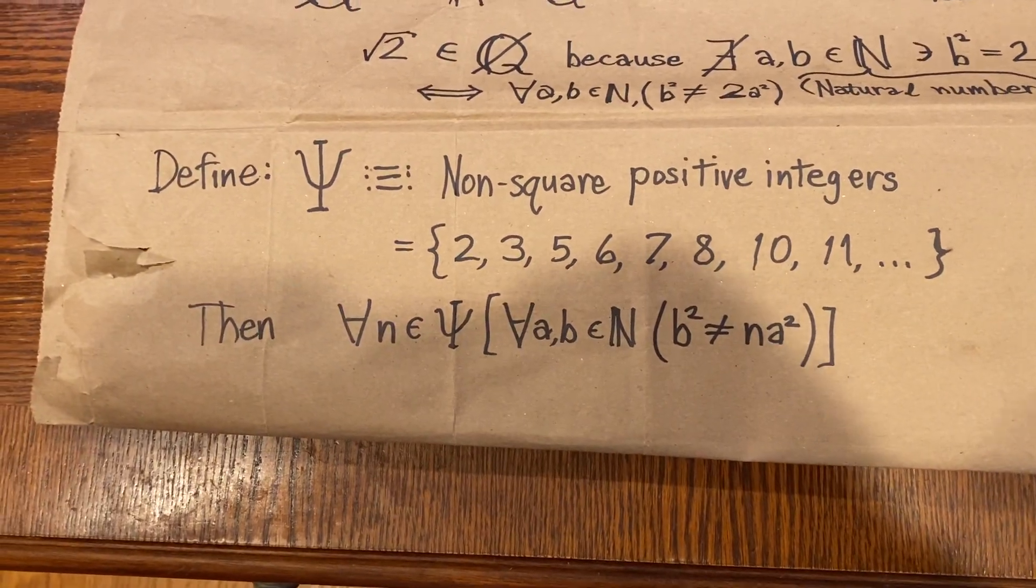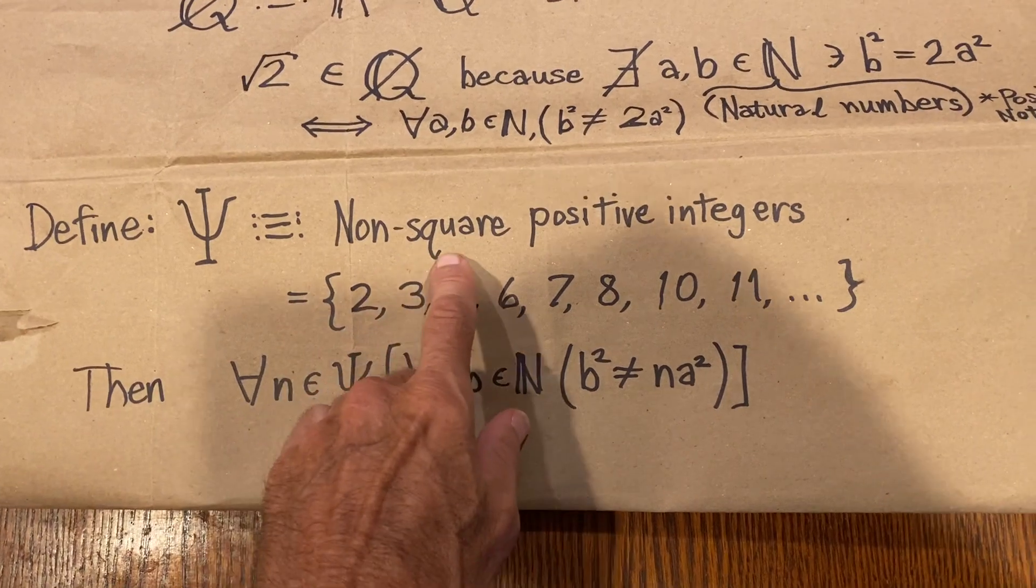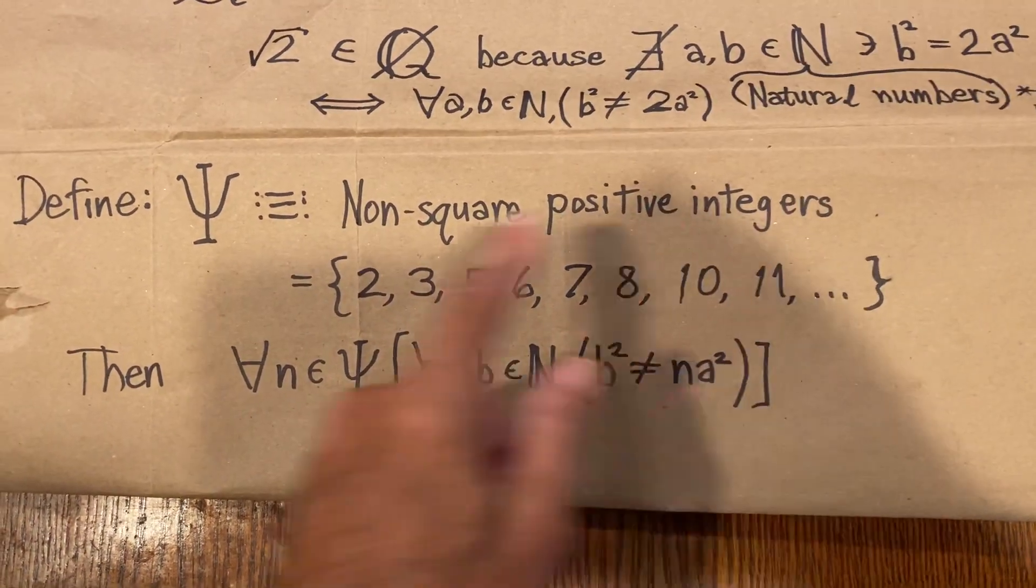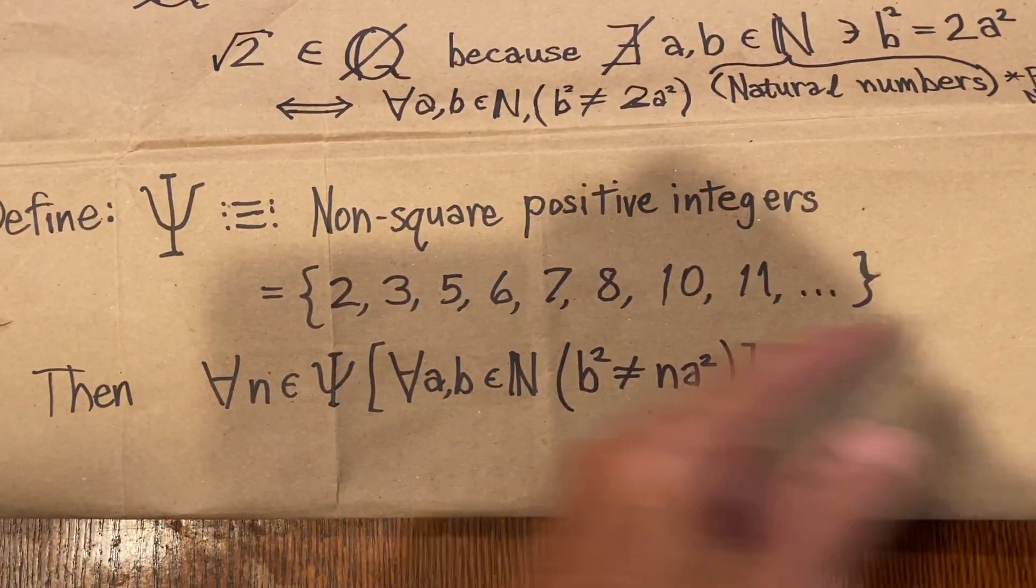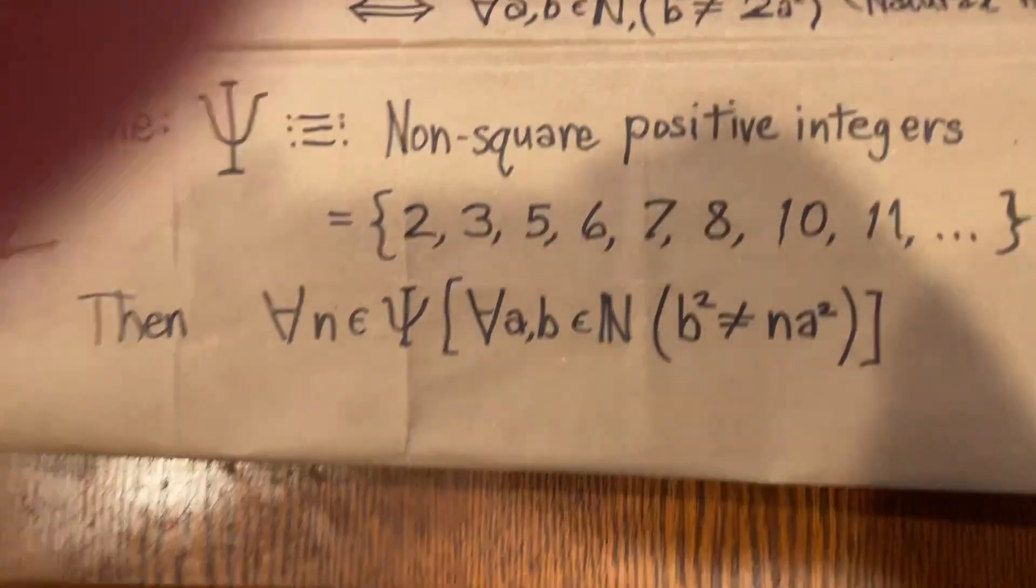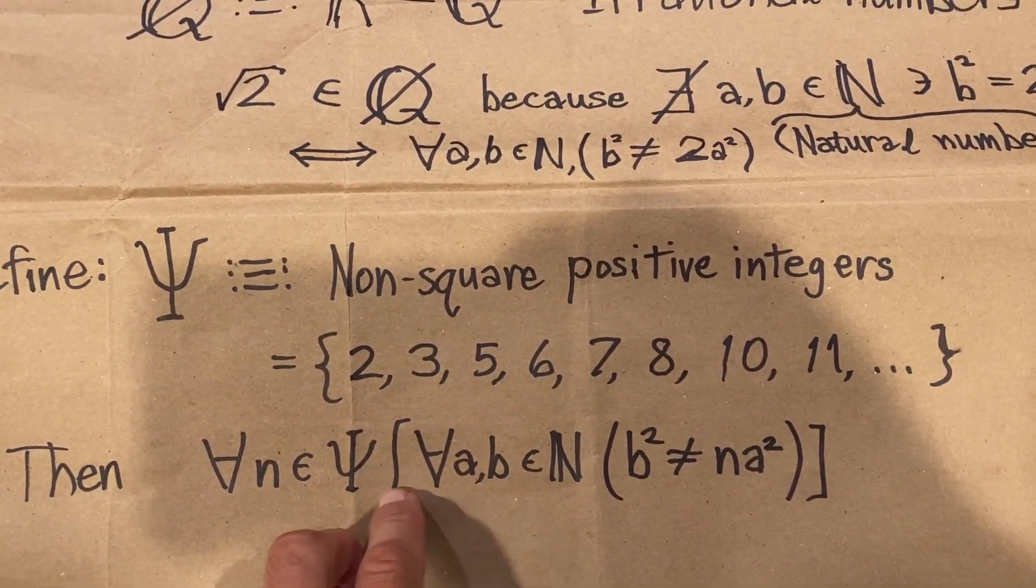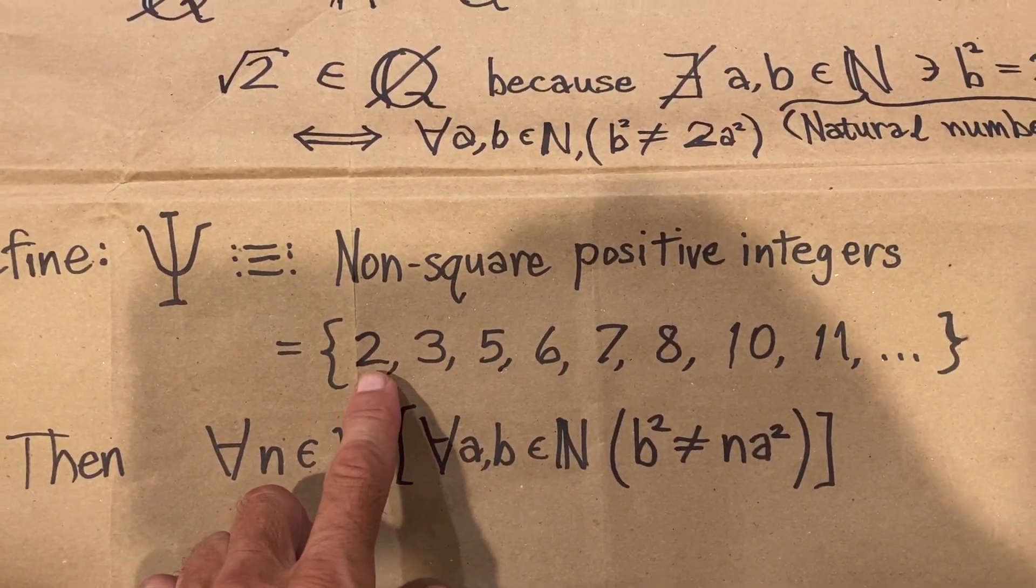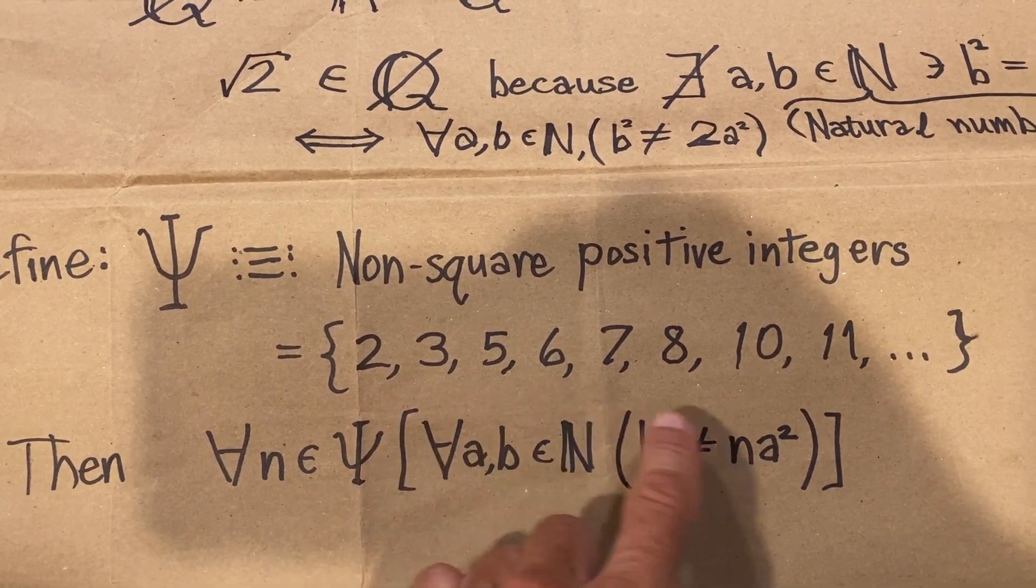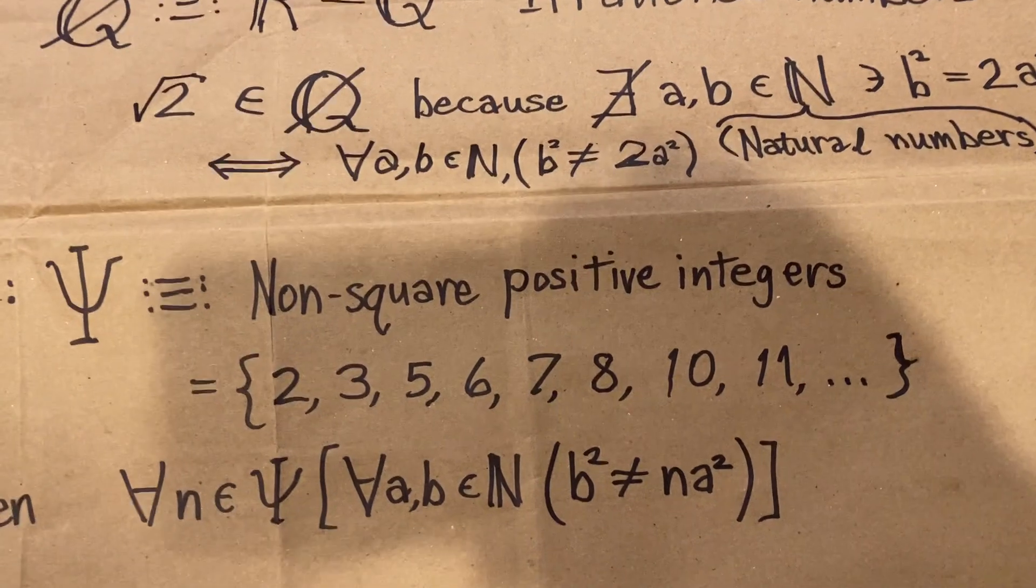Next, let's define C to be the set of non-square positive integers. So we take all the positive integers and we remove all the squares. Well, why are we doing this? We'll see in a minute. Okay, so this set runs 2, 3, 5, 6, 7, 8, 10, 11, 12, 13. It just skips across all the squares.